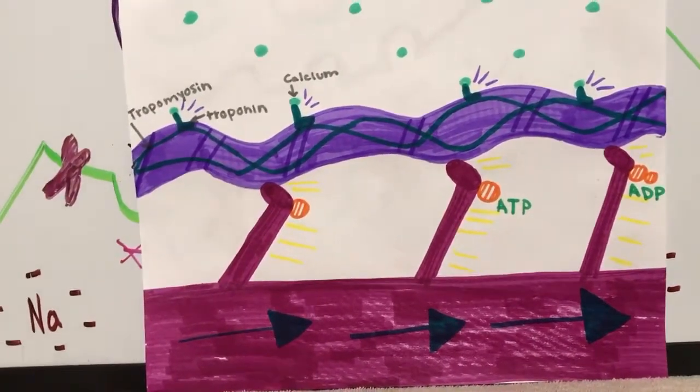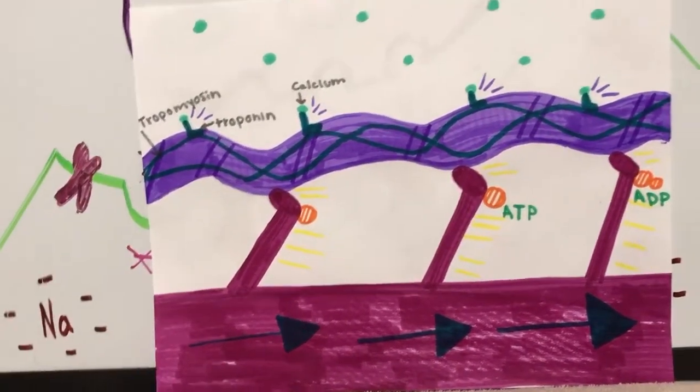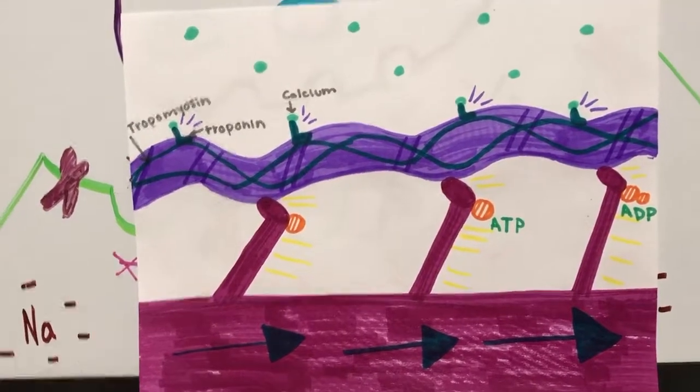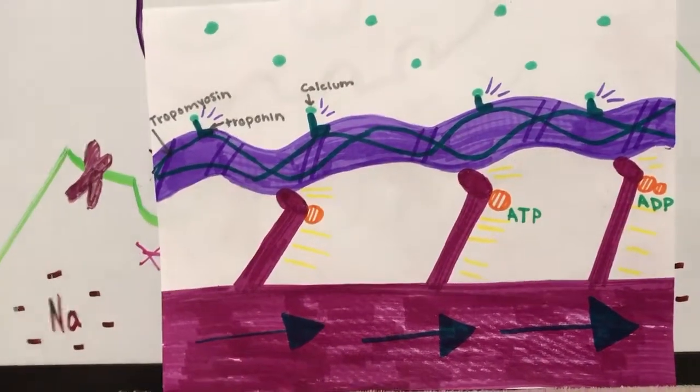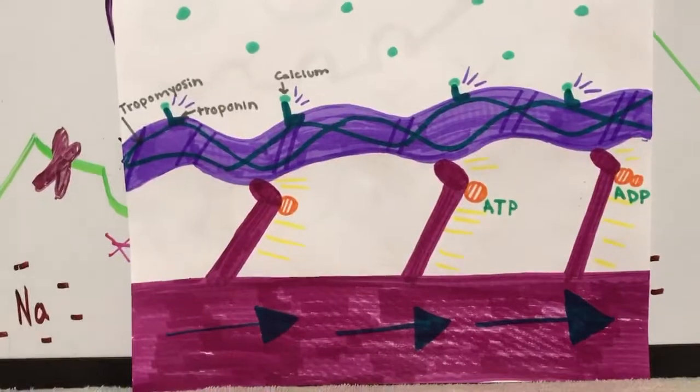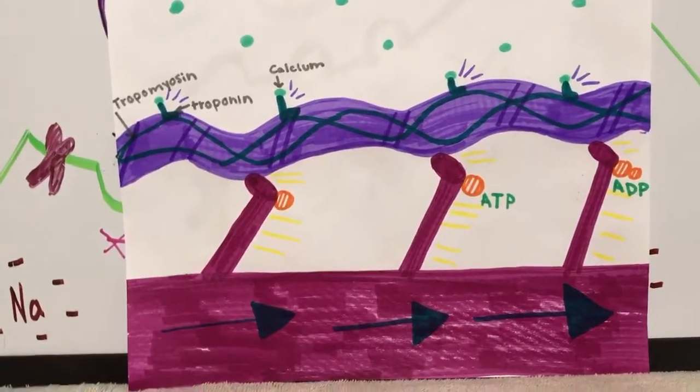This allows for the myosin to go back to covering the actin, and the myofilaments will slide back to their original spots, causing the muscle to relax again.